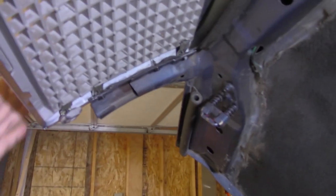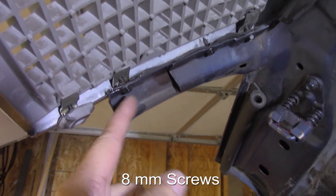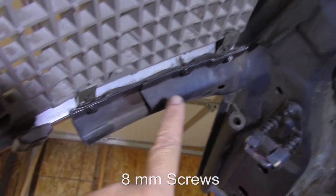Looks like the grille assembly is attached to the car with ten 8mm screws. There's one, two, three on each side. And then there's screws up in here. There's one there.